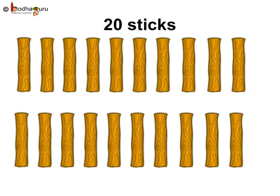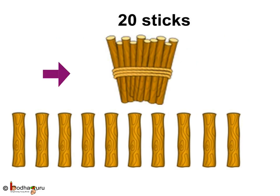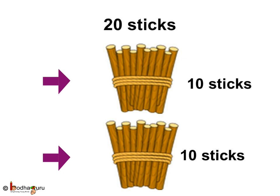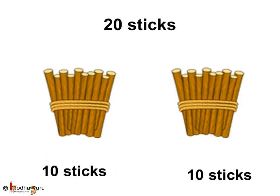How about 20 sticks? First, make a bundle of 10 sticks. And 10 sticks are remaining — let's make a bundle of the remaining 10 sticks. So, there are 2 bundles of 10 sticks. So, 2 bundles of 10s means 20.